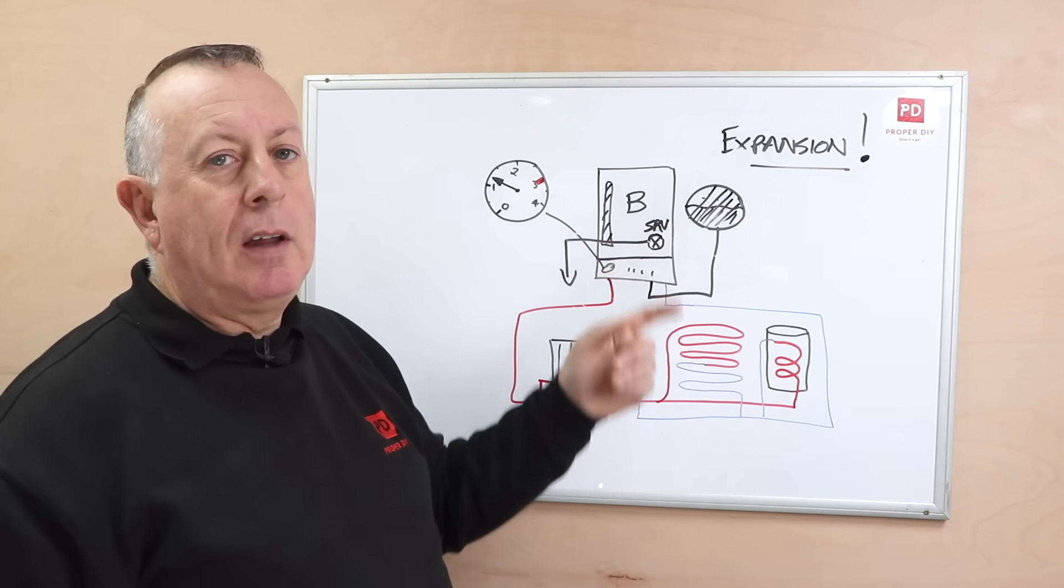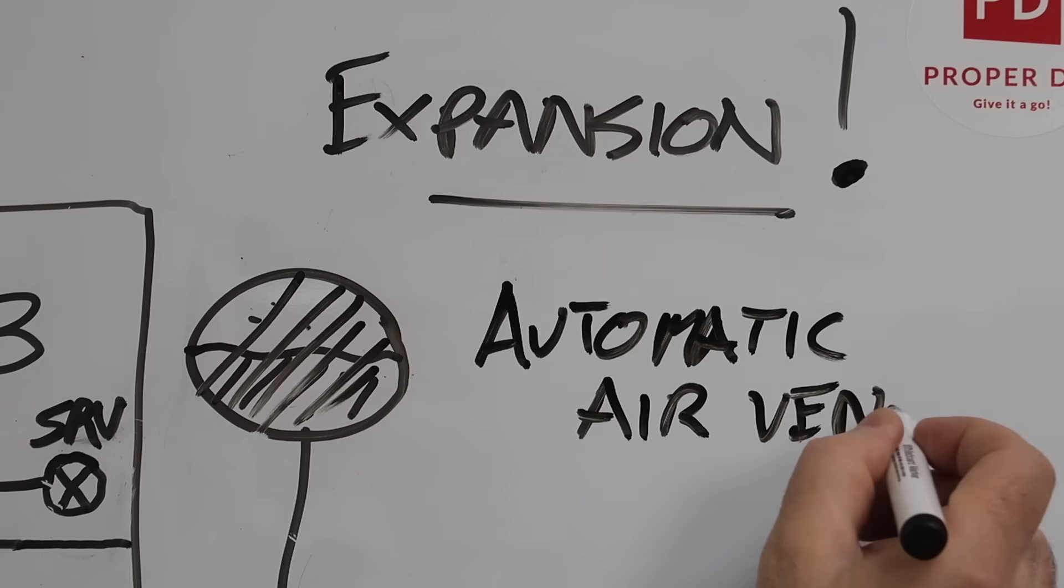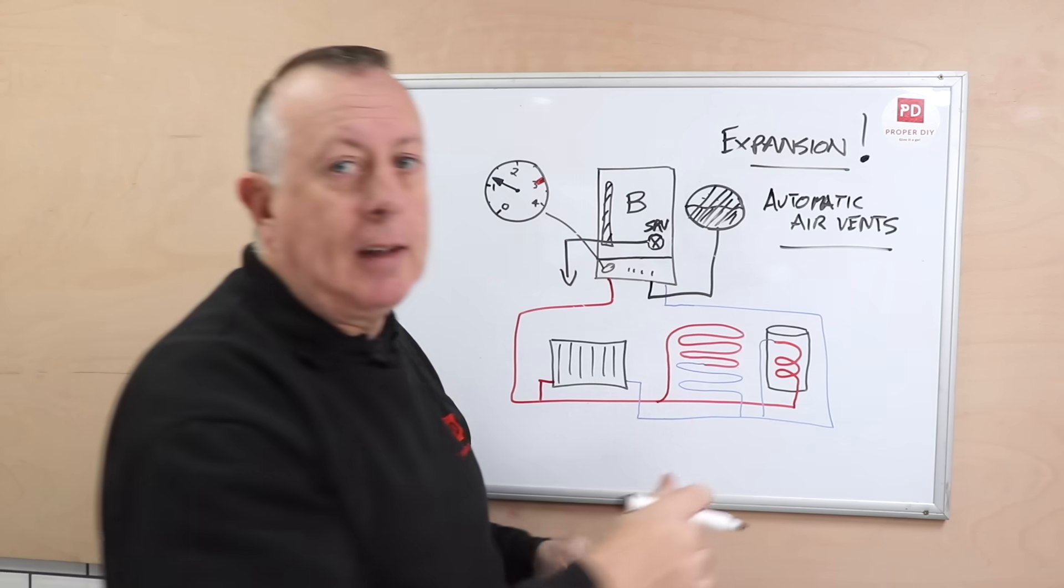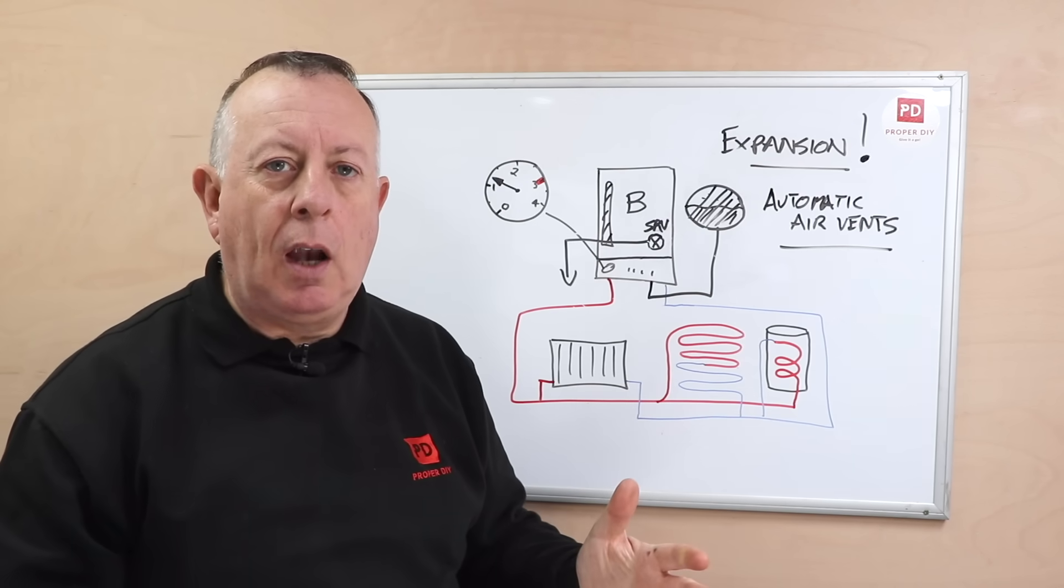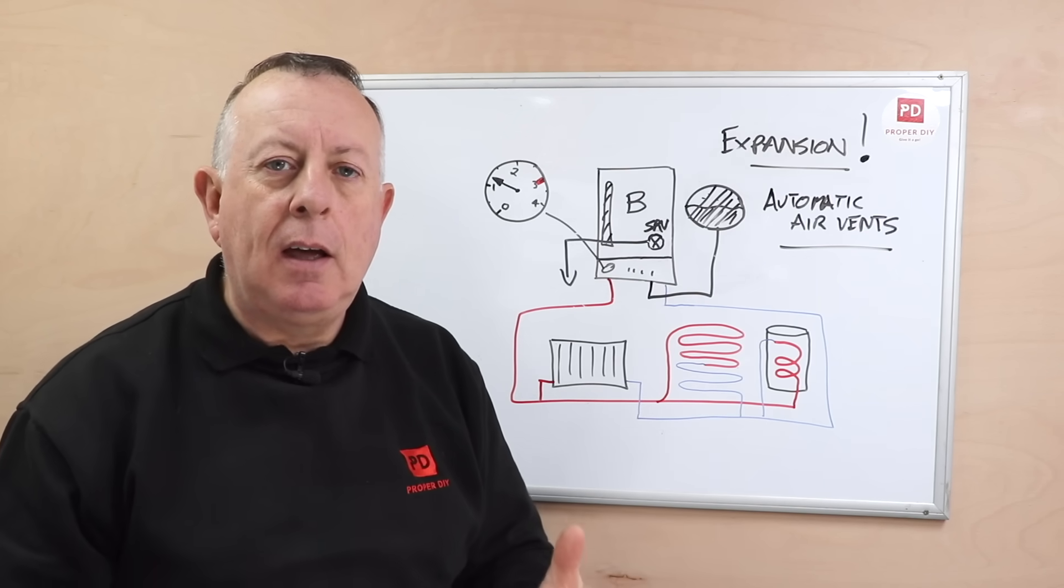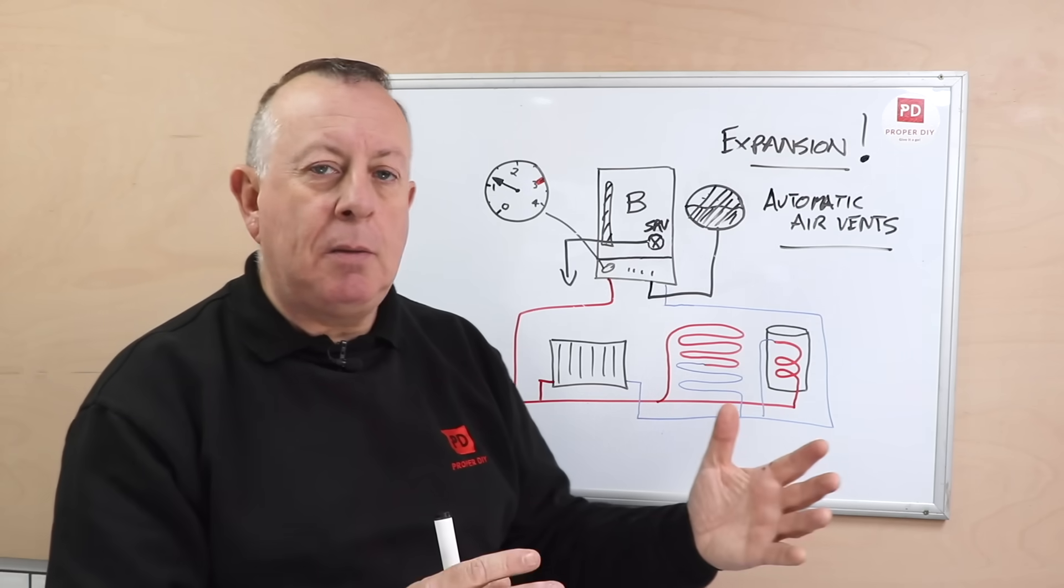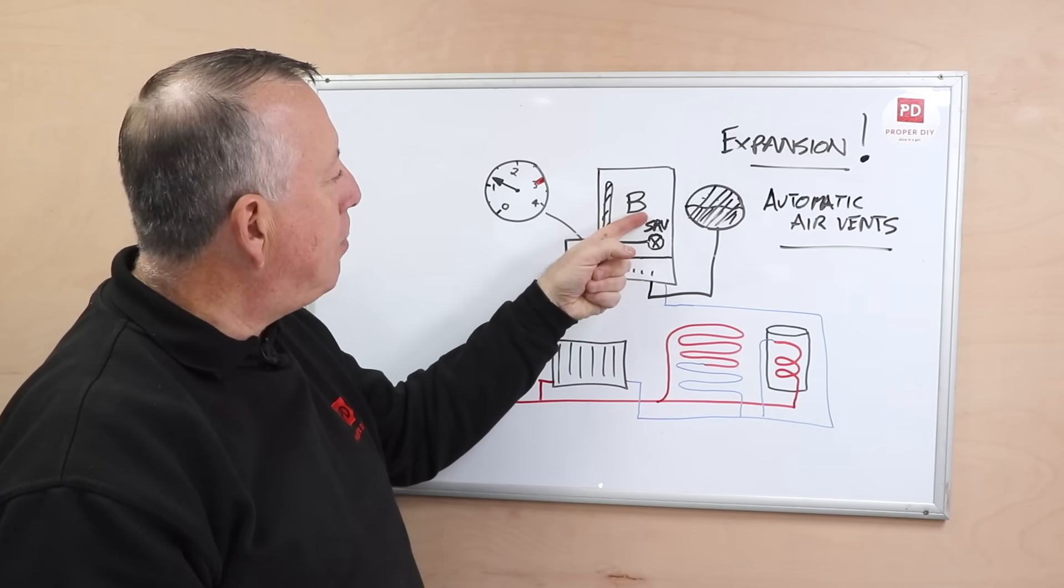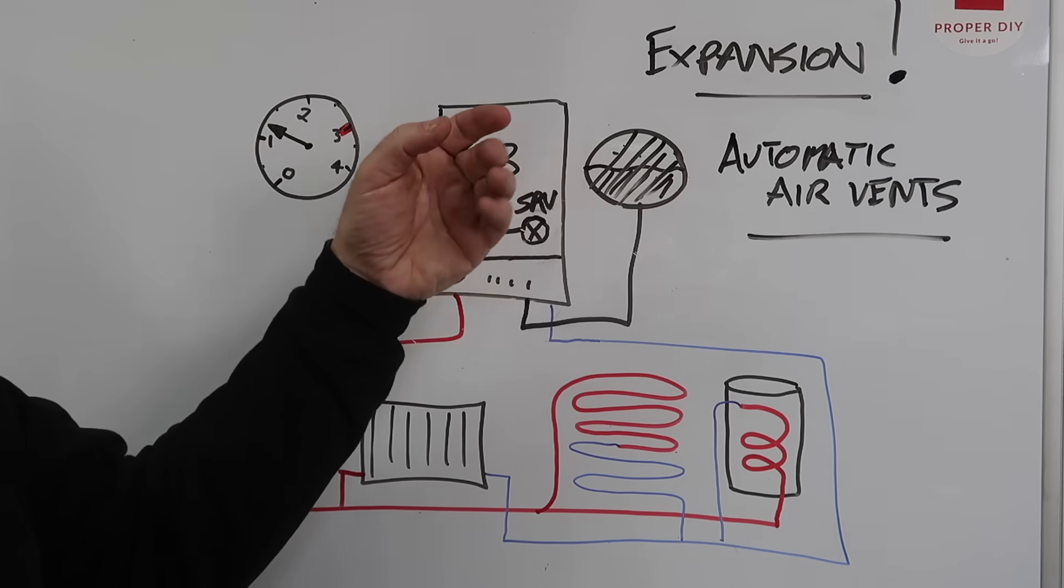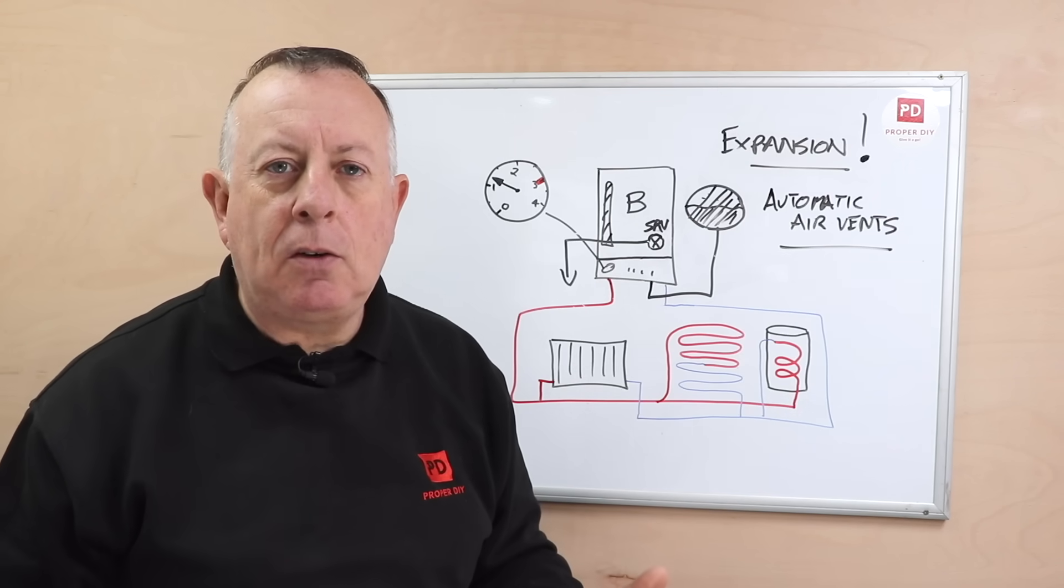Now there is another problem in this boiler that can cause you problems and it's called automatic air vents. Now this is a system within your boiler that dissipates air if it gets trapped in the boiler. It's a bit like having an automatic system that bleeds your radiator but it's in the boiler. So if there is air in the boiler there's a float switch that lets that air out but not the water.